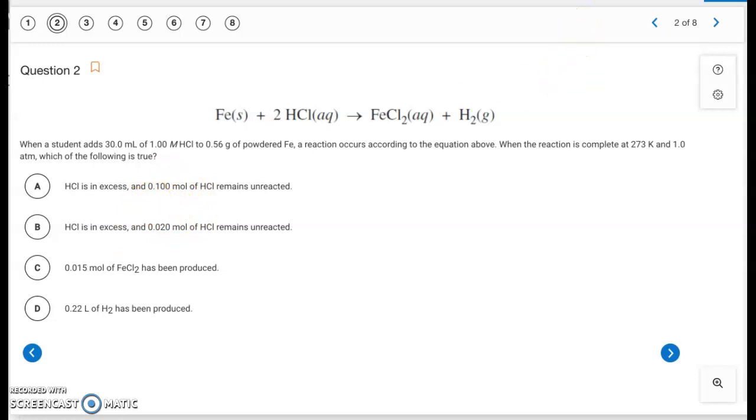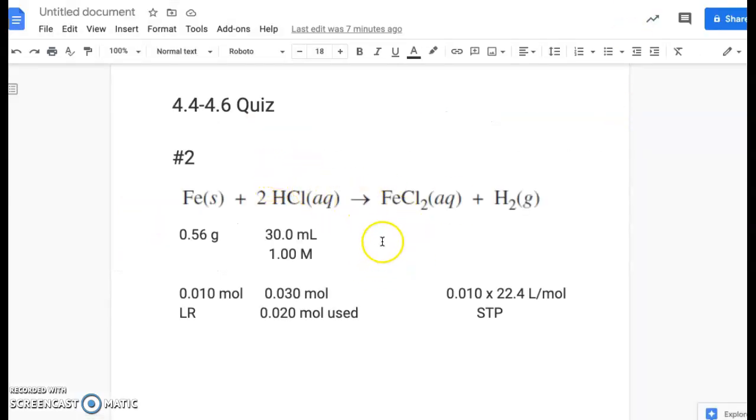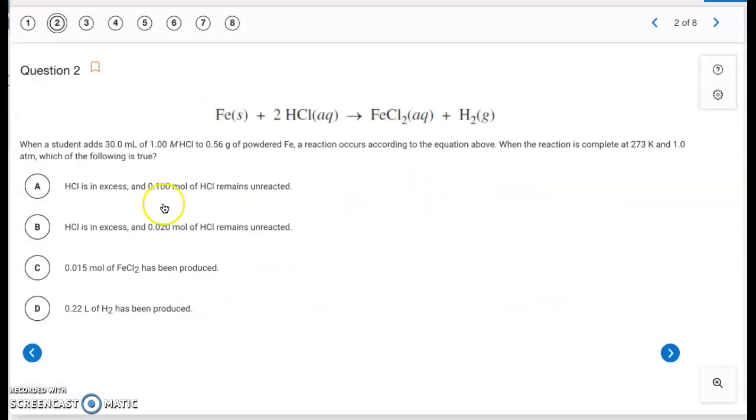It has the right reactant in excess, but not the correct remainder. Then the next choice, letter C, if this is our limiting reactant, that's going to determine how much product we get. And everything between Fe and our products is a 1 to 1 ratio. So we're going to get 0.010 moles of each of our products. So again, going back to our choice, that eliminates letter C because we would get 0.010 moles of FeCl2 produced, not 0.015.